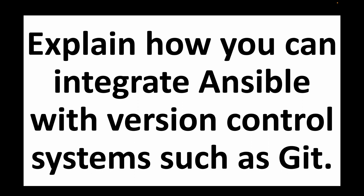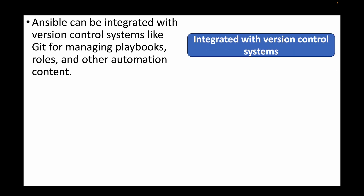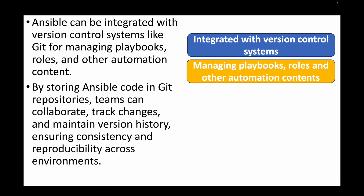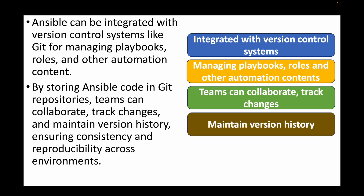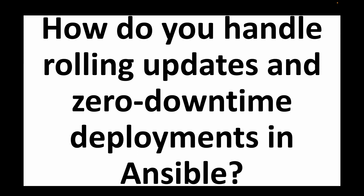The next question is: explain how you can integrate Ansible with version control systems such as Git. Ansible can be integrated with Git, which helps in managing playbooks, roles, and other automation content by maintaining multiple versions. By storing Ansible code in Git, teams can collaborate, track changes, and maintain version history. This ensures consistency and reproducibility across multiple environments. Git integration is ideal when you want to collaborate with others and keep a track of all changes.